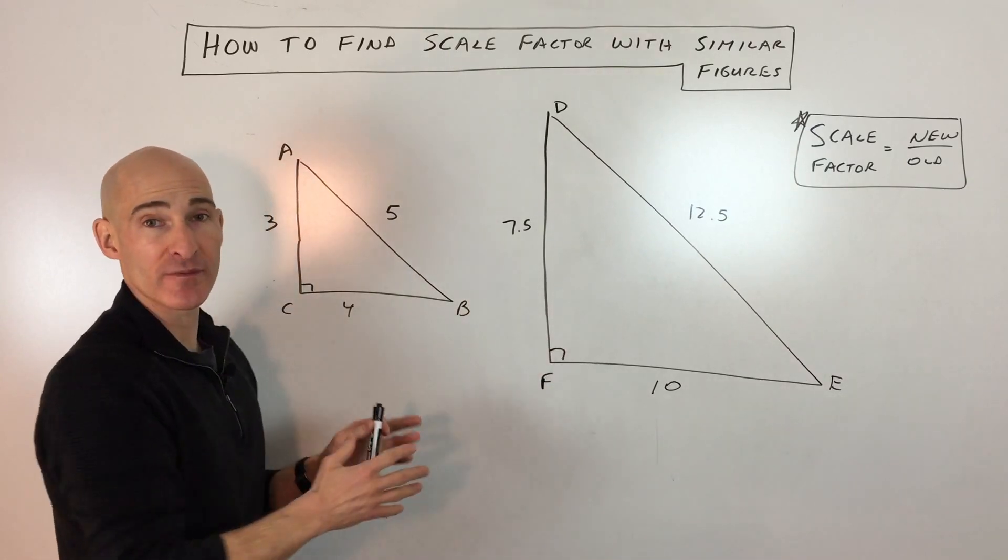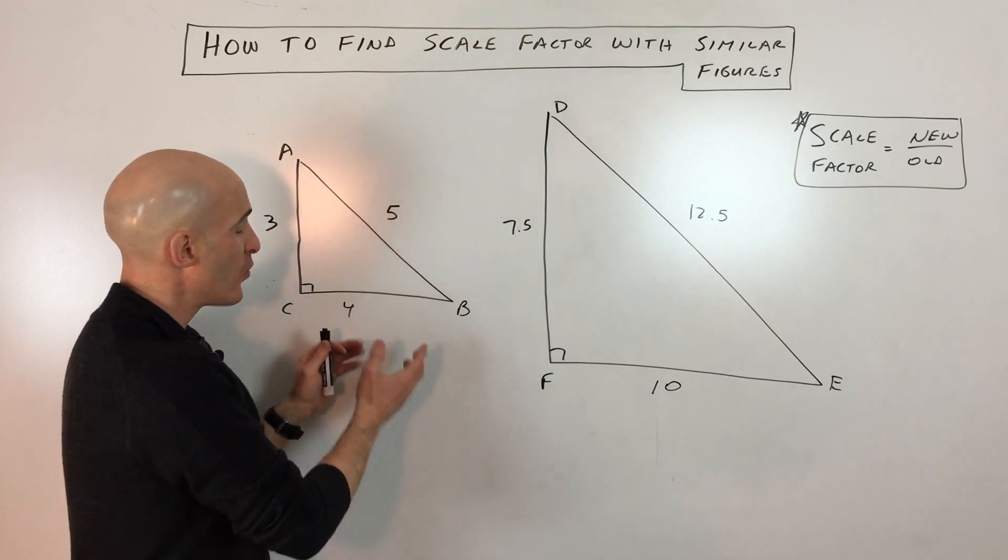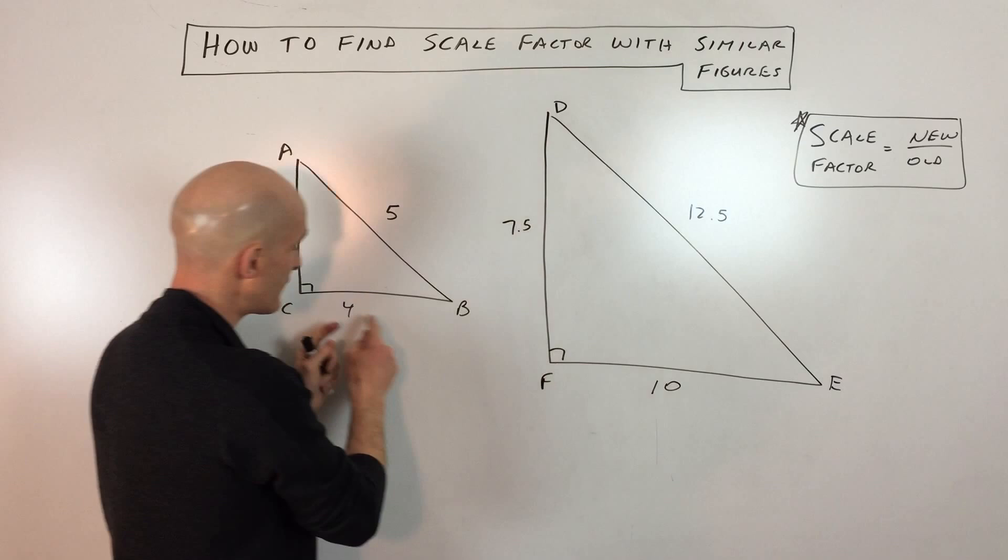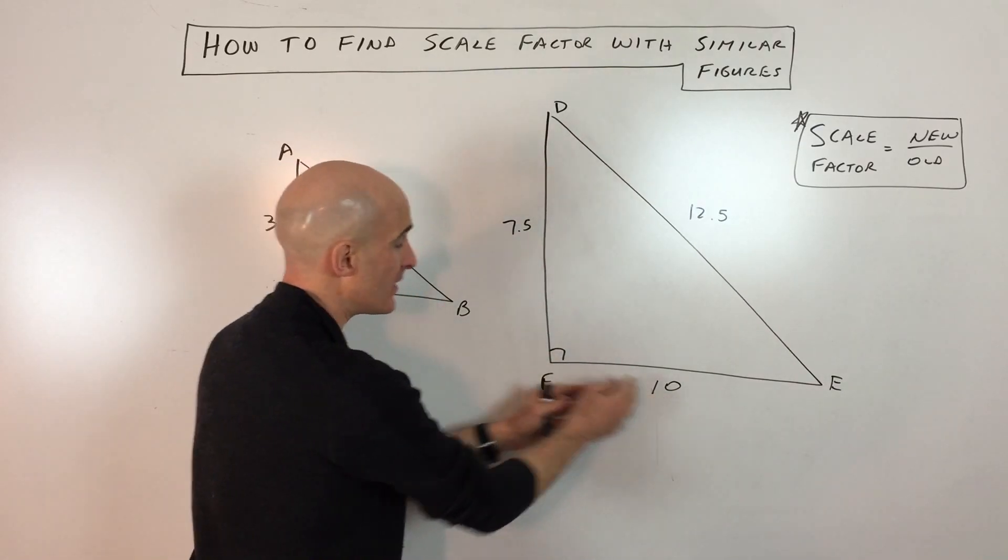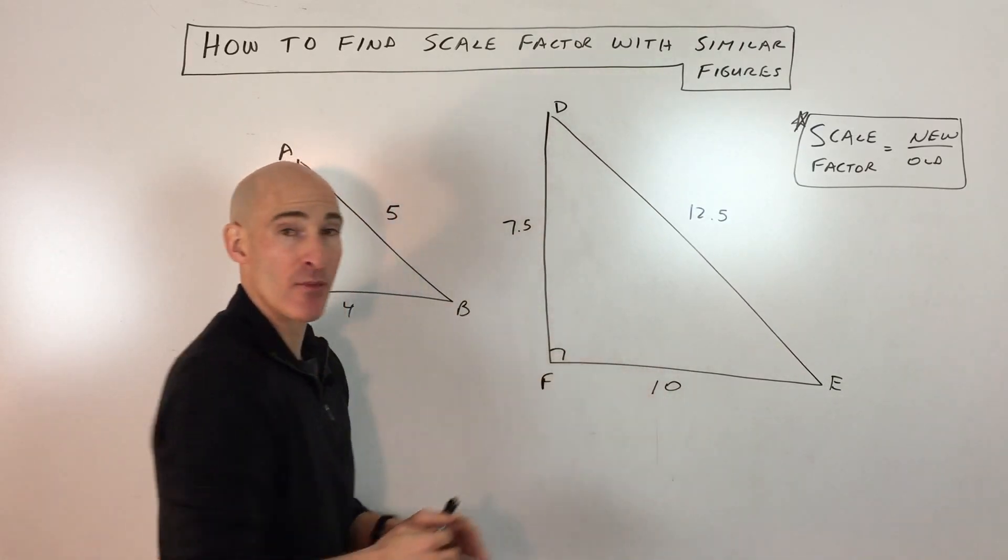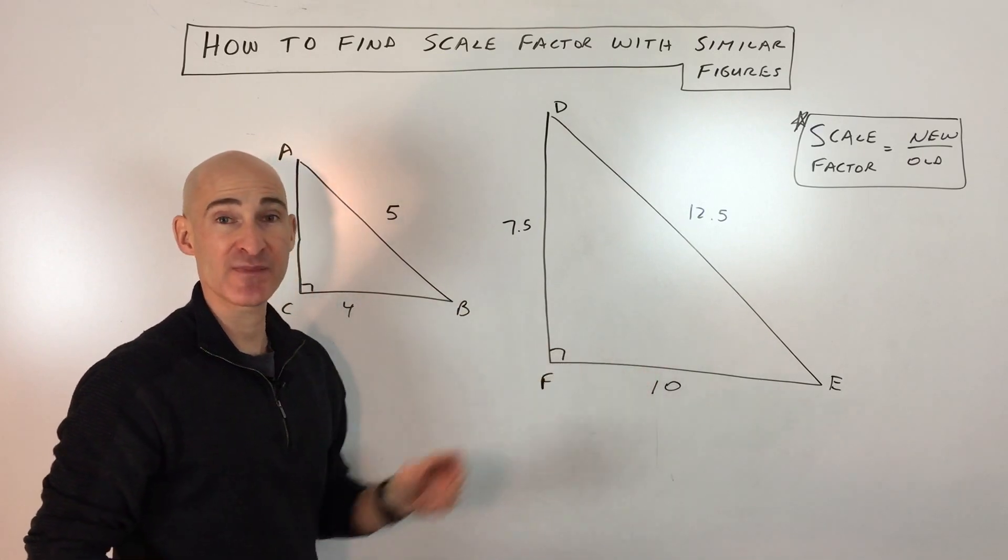Now what you want to do, if the figures are similar and they tell you that in the problem, is match up the corresponding sides. So for example, if I'm comparing 4 and 10, I'm going from 4 to 10. What am I multiplying by to get from 4 to 10? That's my scale factor.